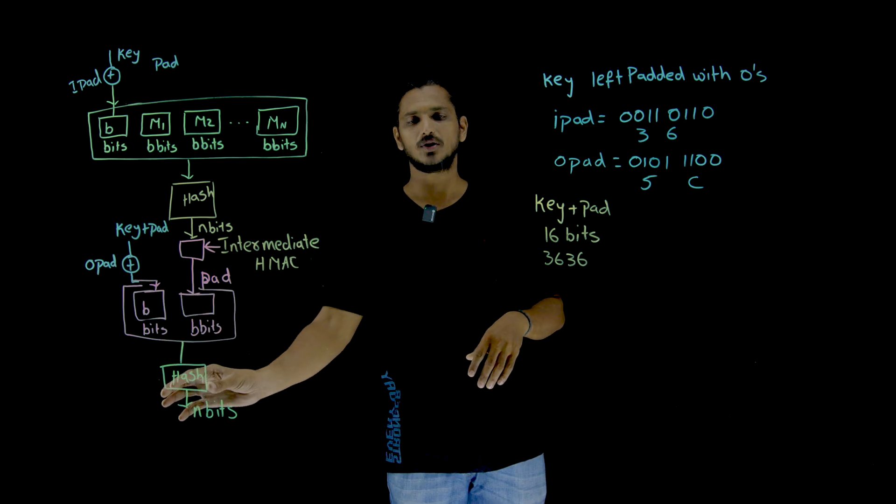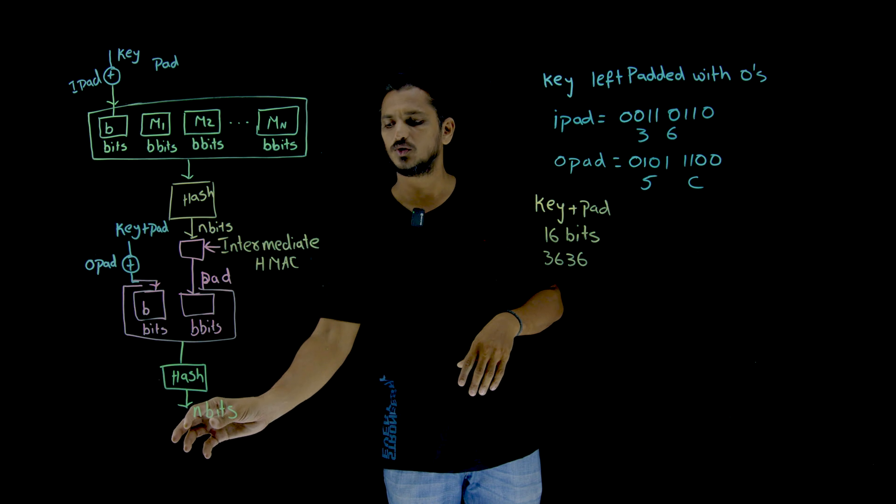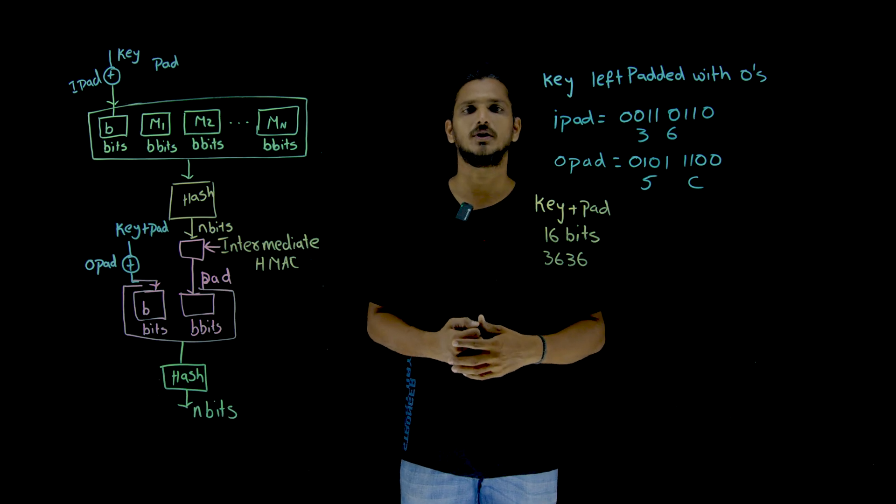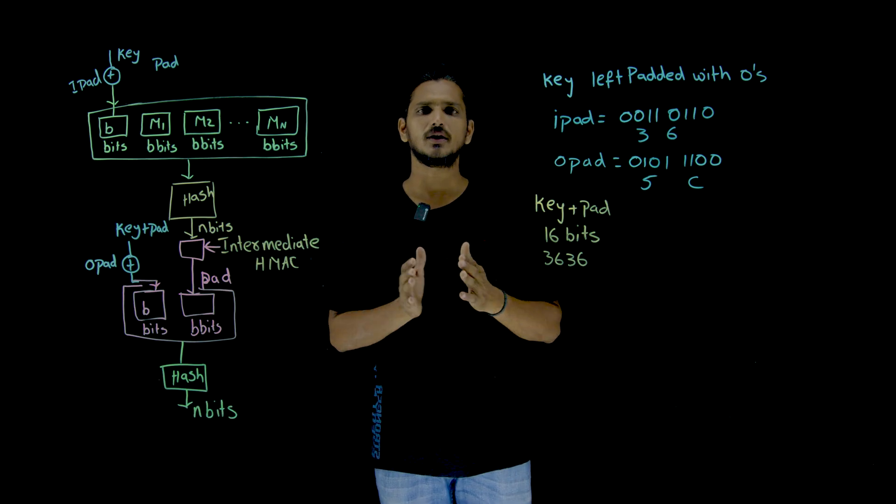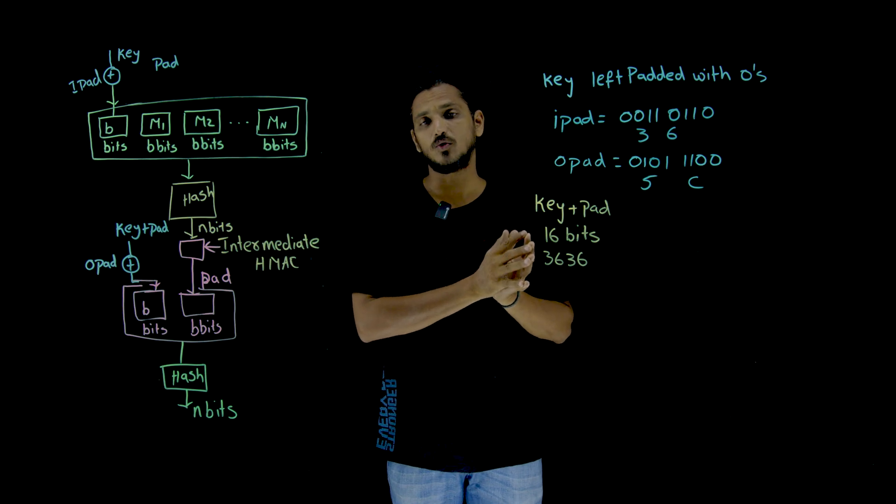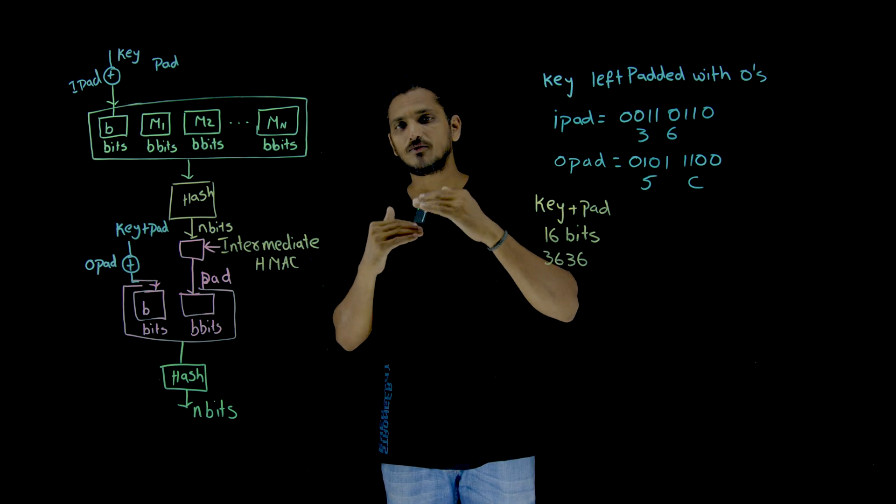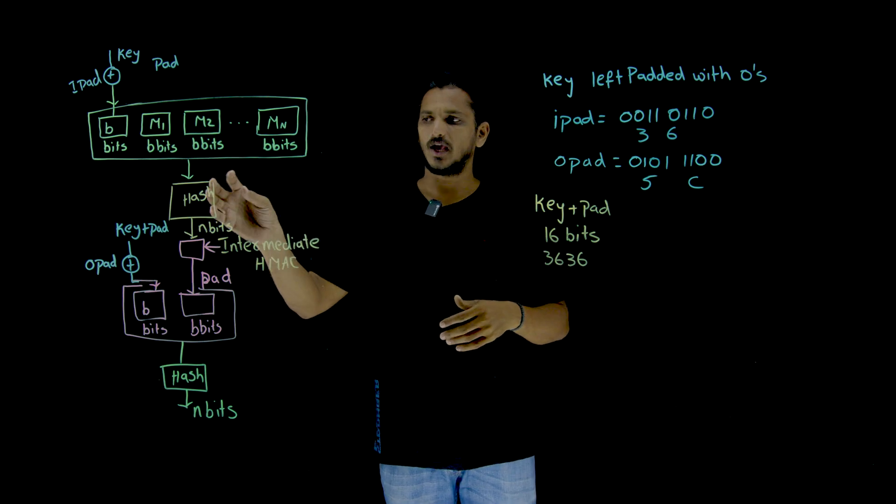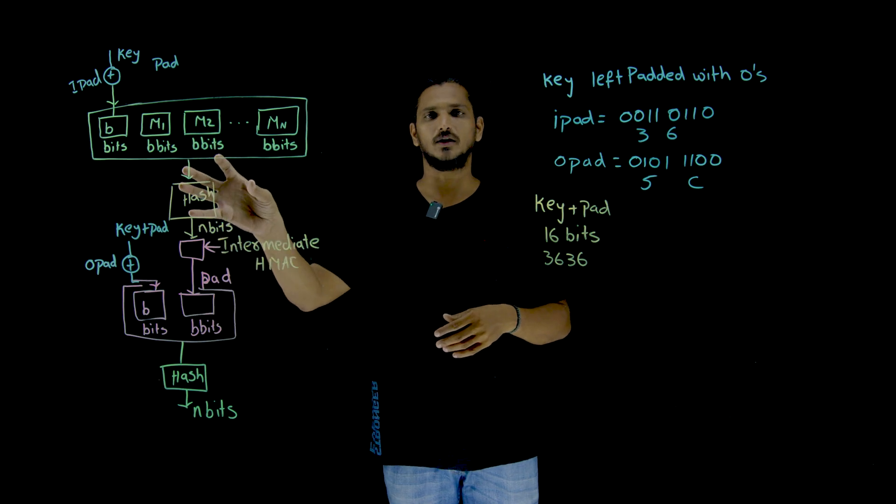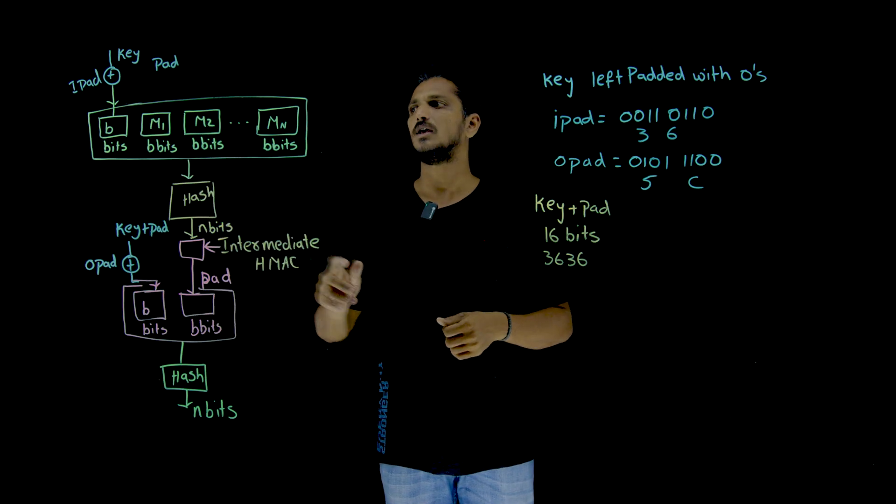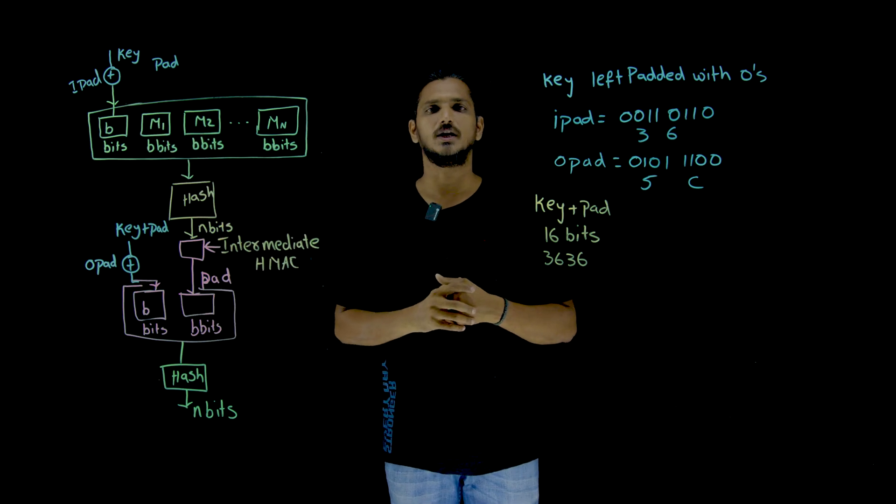These two are sent into the hash function and it is going to generate a n-bit output. This n-bit output, we consider it as our message authentication code. In order to provide two levels of complexity, hash function is applied two times like this. This we call it as hash message authentication code.